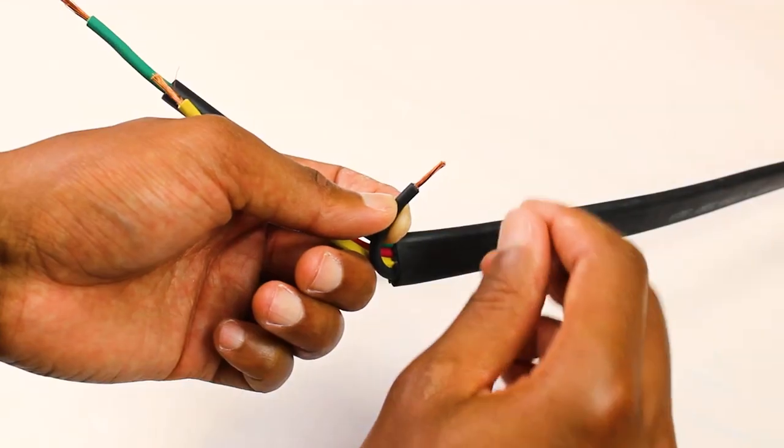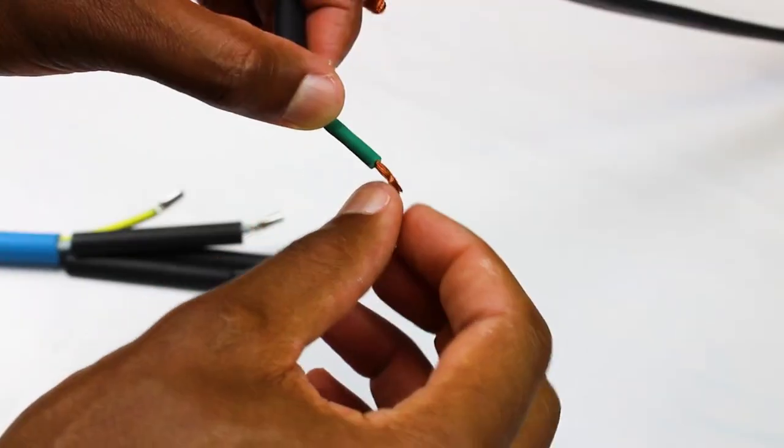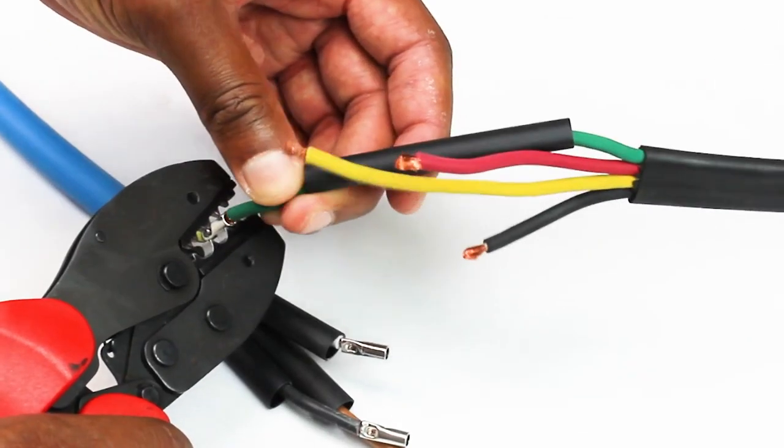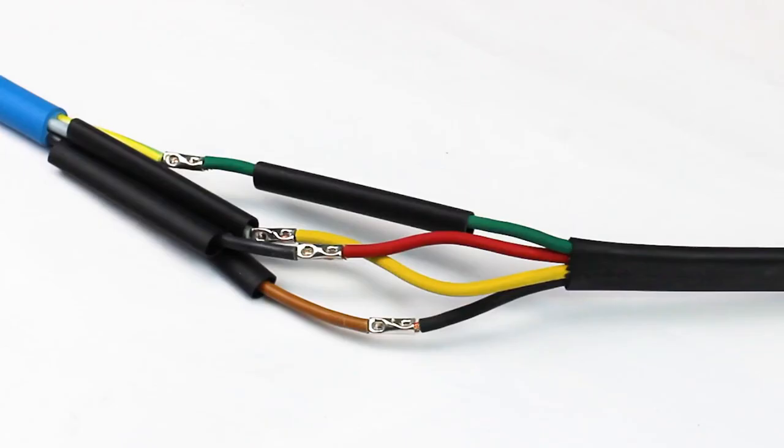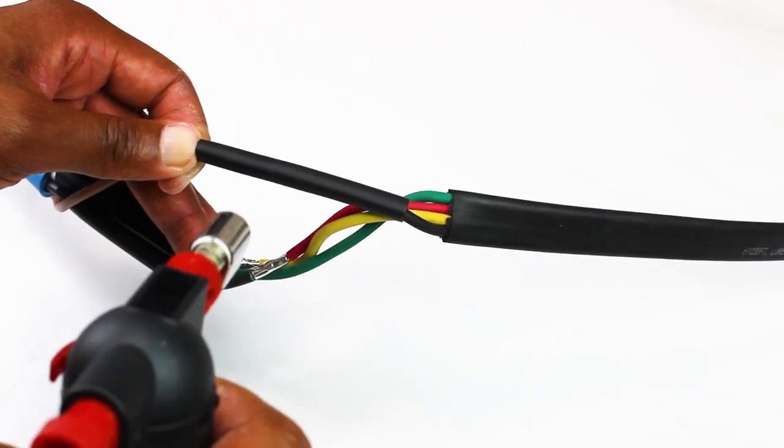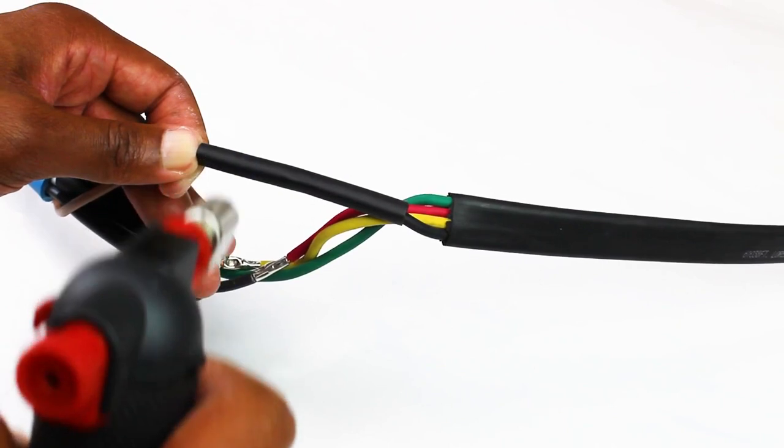It might be necessary to double the wire ends of 2.5 mm² motor cables. When heating the shrinking tubes, start from the middle and move slowly toward one end.